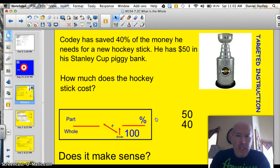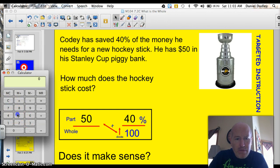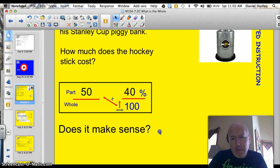Tonight we're going to talk about Cody and his hockey stick. Cody has saved 40% of the money he needs for a new hockey stick. He has $50 in his Stanley Cup piggy bank. How much does the hockey stick cost? We're going to use the box again. So we know that he's got $50 of some number, and that's equivalent to 40%. So $50 is the part and we're missing the whole. So we'll just pop out our calculator here. We know that 50 times 100... we're going to just add two zeros on and get 5,000. And then we're going to divide that by the third number. Divide by 40 and we get 125.